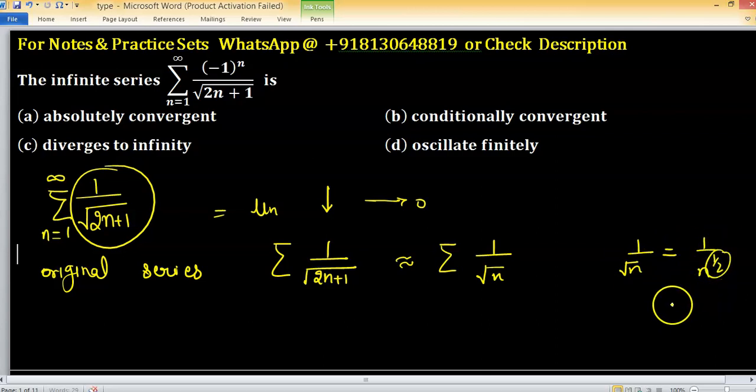The value of this is p. p is less than 1. So, by p-test, this positive term series is divergent.